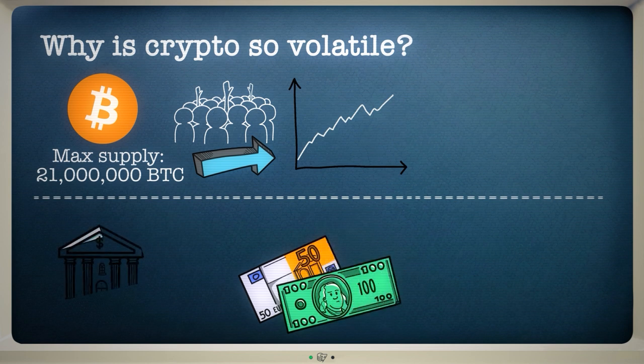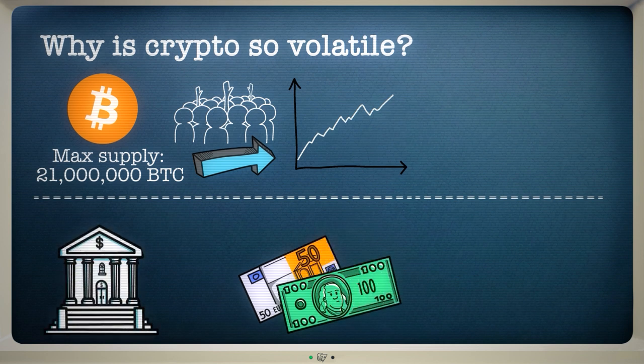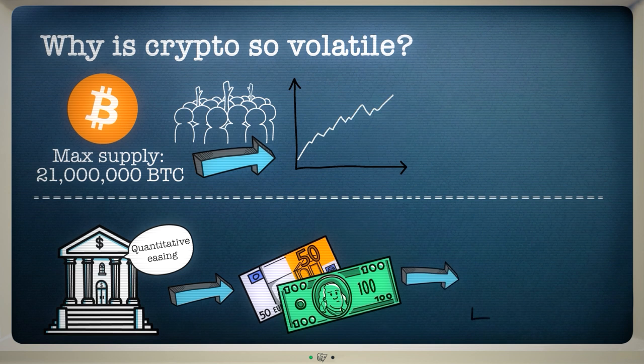Normal currencies are also controlled by central banks. They have a range of tools that are designed to keep dollars, pounds and euros stable. These controls don't exist in the crypto world, resulting in much bigger price movements on a daily basis.